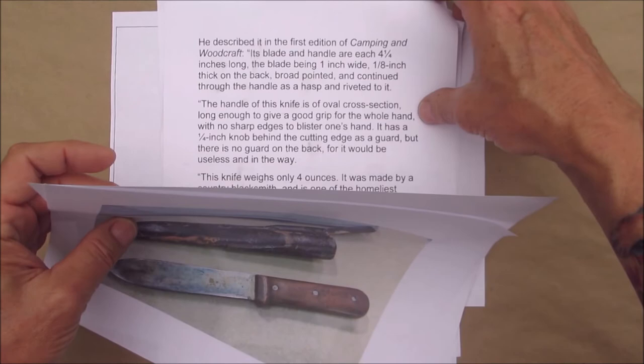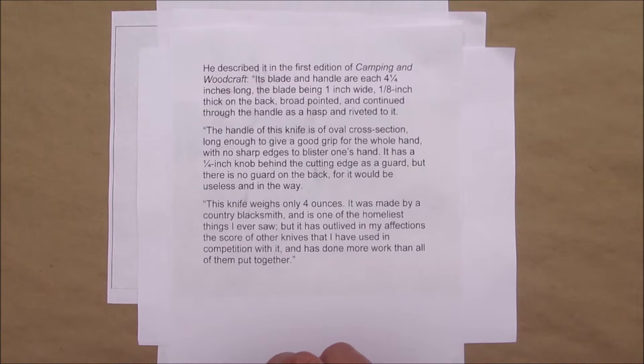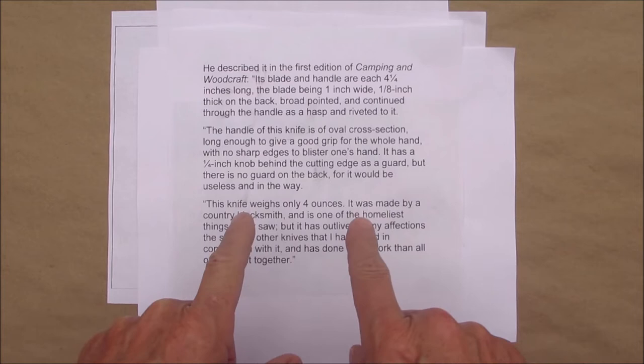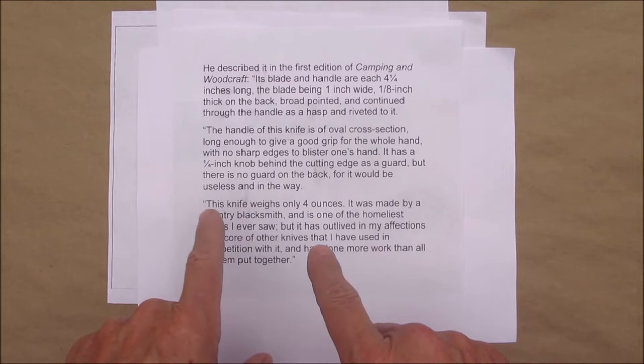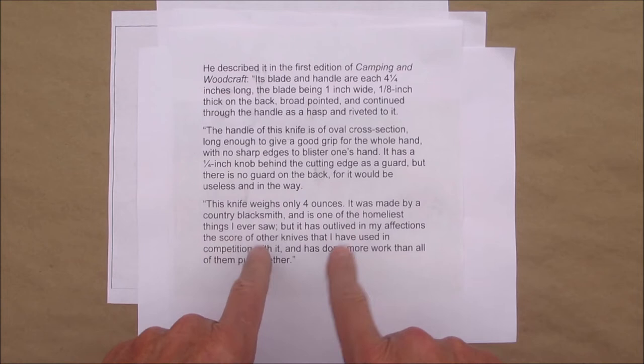The way Horace described it: the blade is four and a quarter inches long, one inch wide, one eighth of an inch thick on the back, broad pointed. It continues through the handle as a tang and has been riveted to it. It's an oval cross section, long enough to give a good grip in the whole hand with no sharp edges. It has a quarter inch knob behind the cutting edge as a guard, but there's no guard in the back for it would be useless and in the way.